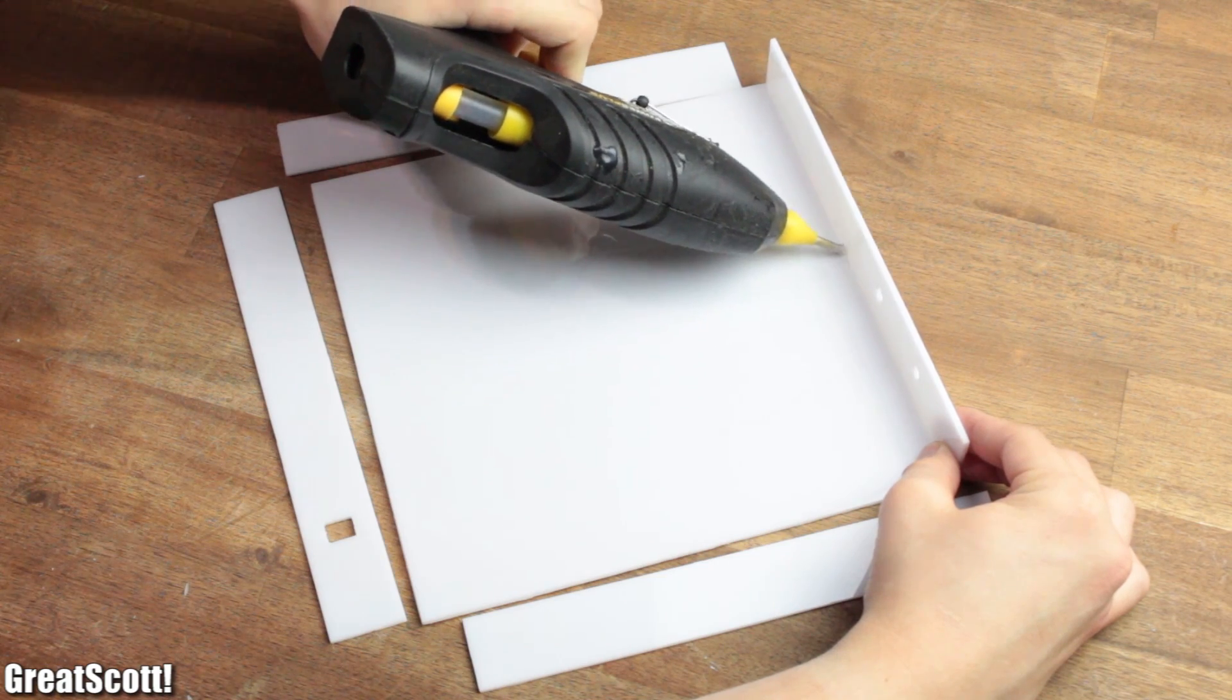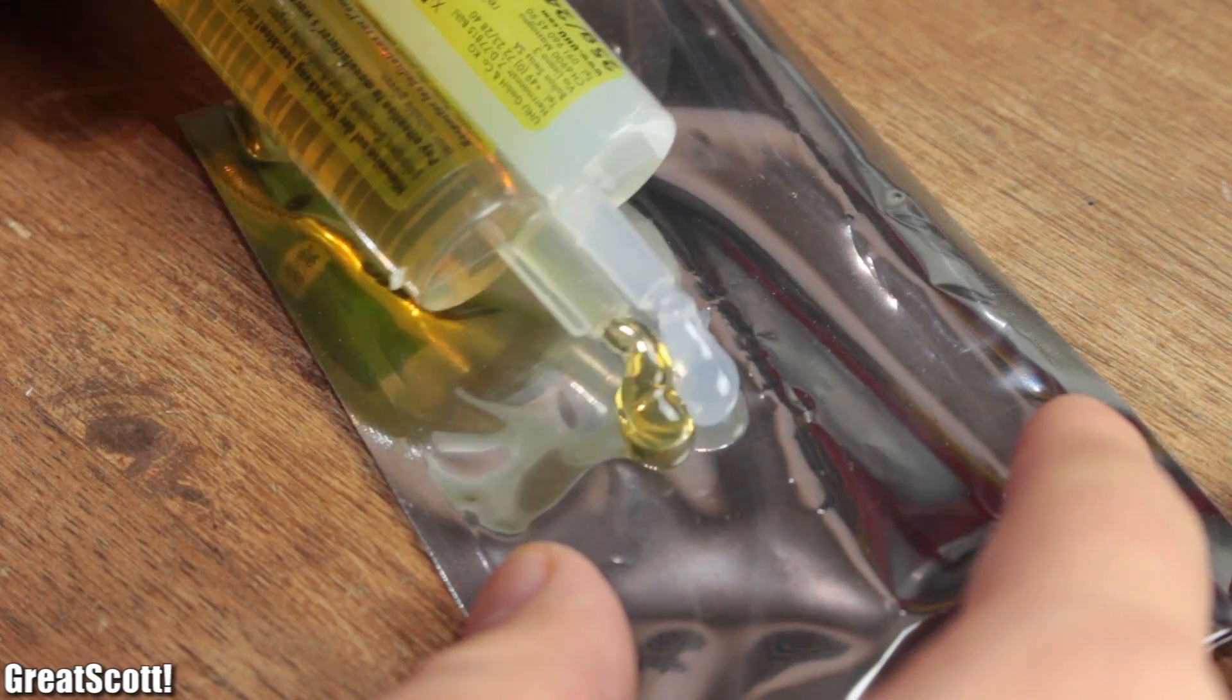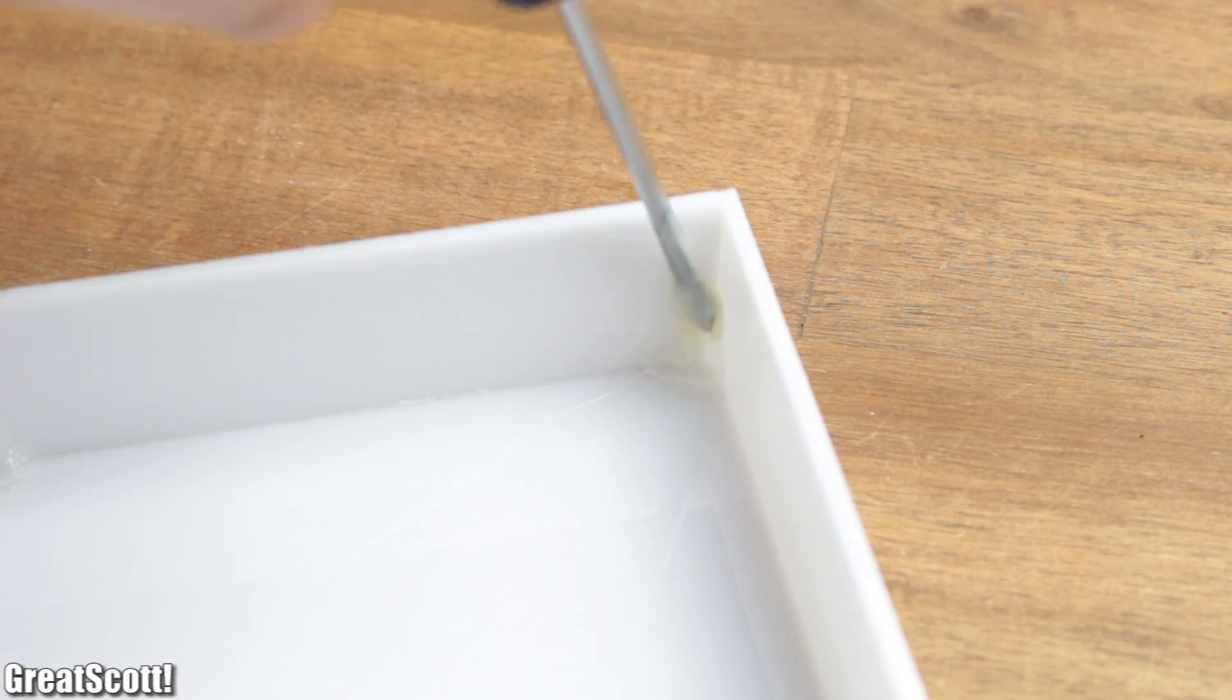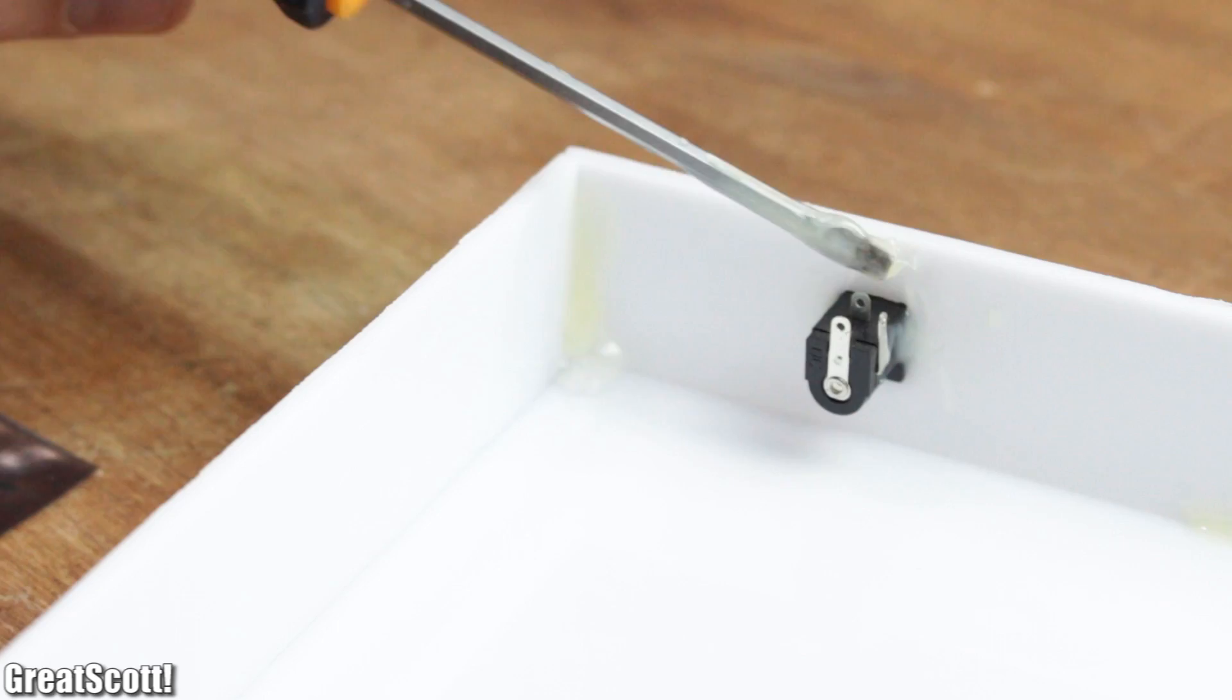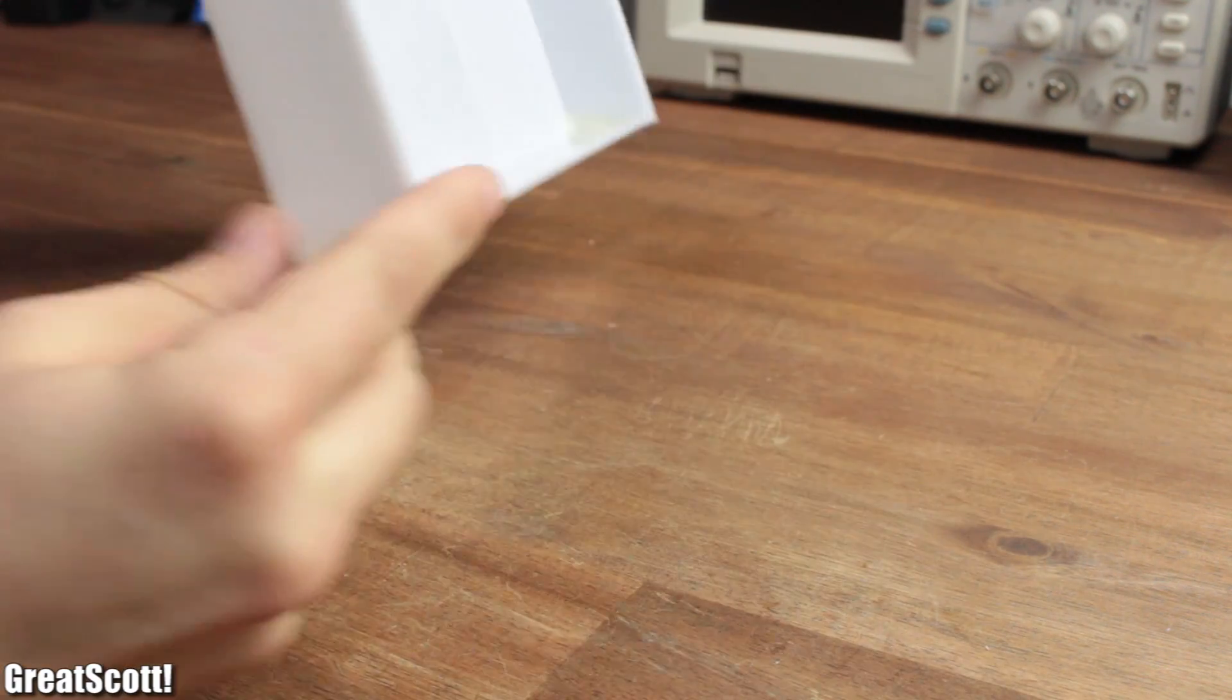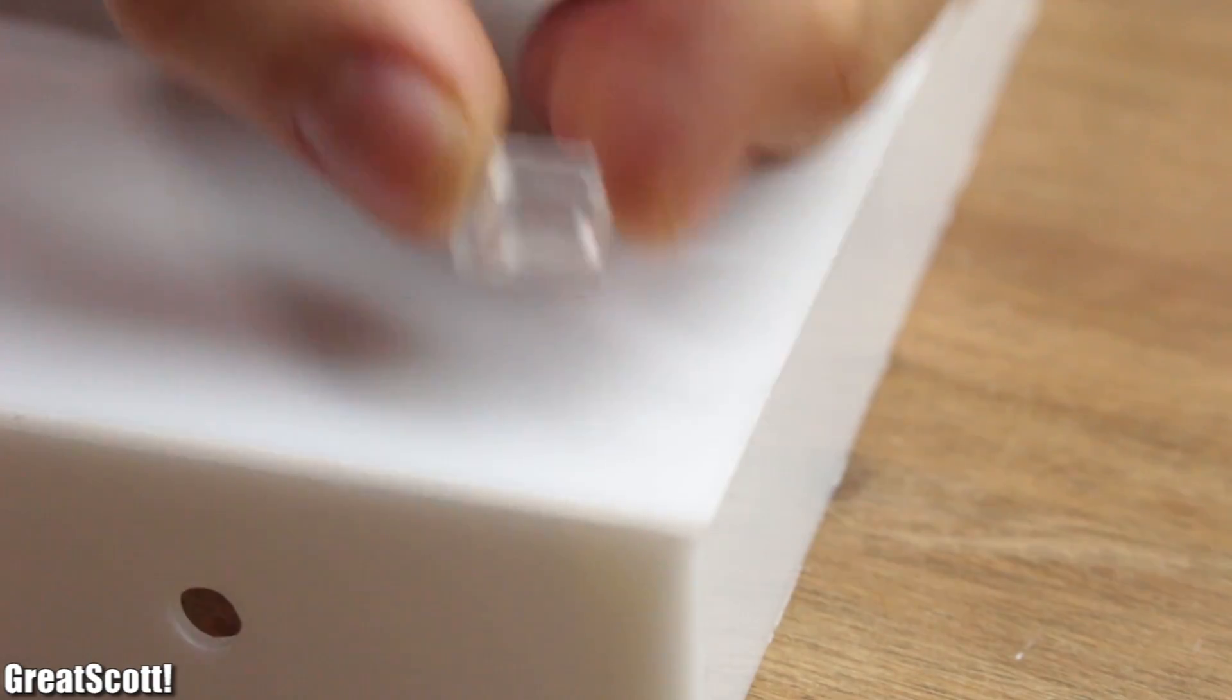I used a couple of hot glue drops to create the shape of the case temporarily before I used two component adhesive to glue it all together permanently. And while I was at it, I also glued the DC input in its place. Before the case was complete for now, I also added four rubber feet on the bottom side.